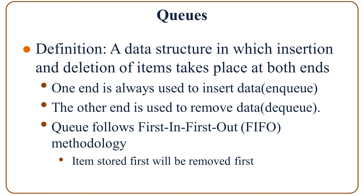Now we talk about queues. What is a queue? A queue is a data structure in which insertion and deletion of items takes place at both ends. One end is always used to insert data, which we call the enqueue operation. The other end is used to remove data, which we call the dequeue operation. Queues follow the first in, first out, or FIFO methodology, which means items that are stored first will be removed first.